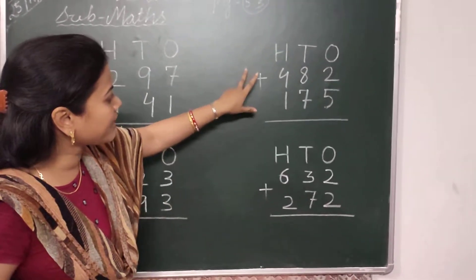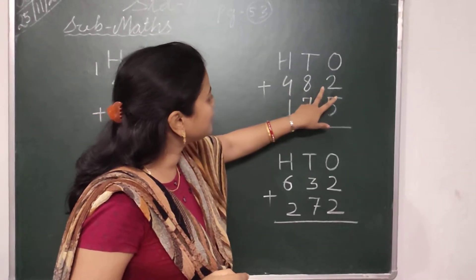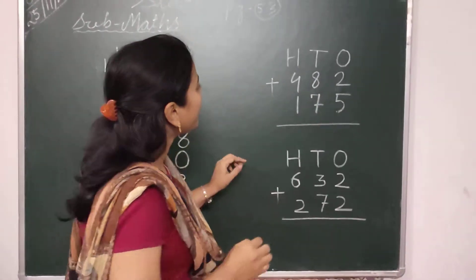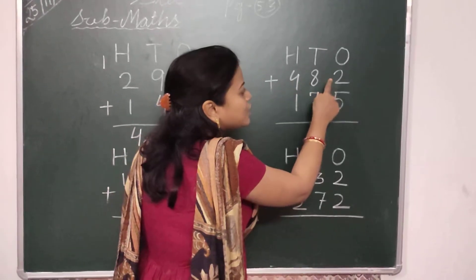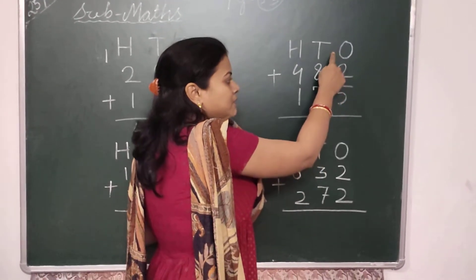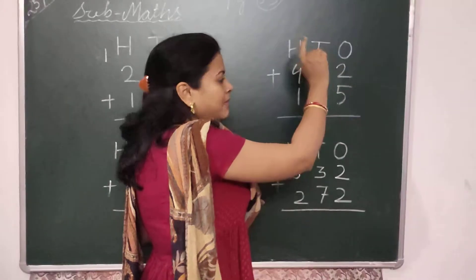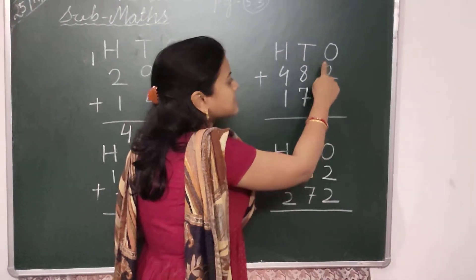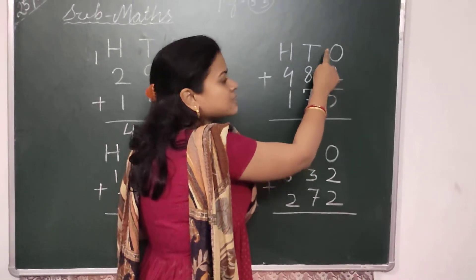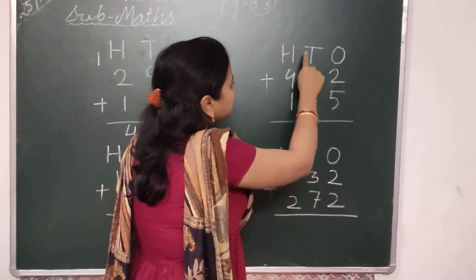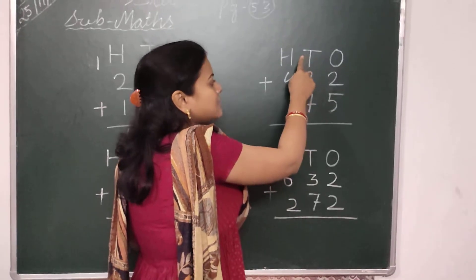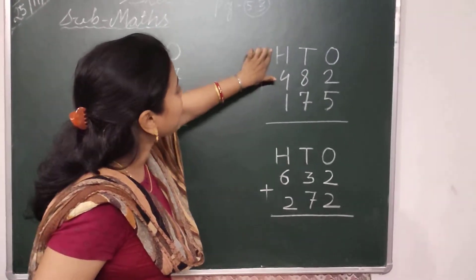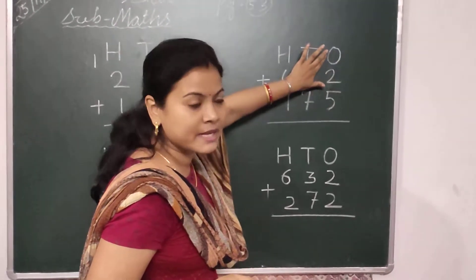Your next sum is 482 plus 175. In 482, 2 is in the 1's place, 8 is in the 10's place, and 4 is in the 100's place. In 175, 5 is in the 1's place, 7 is in the 10's place, and 1 is in the 100's place. We start the addition from the 1's place.